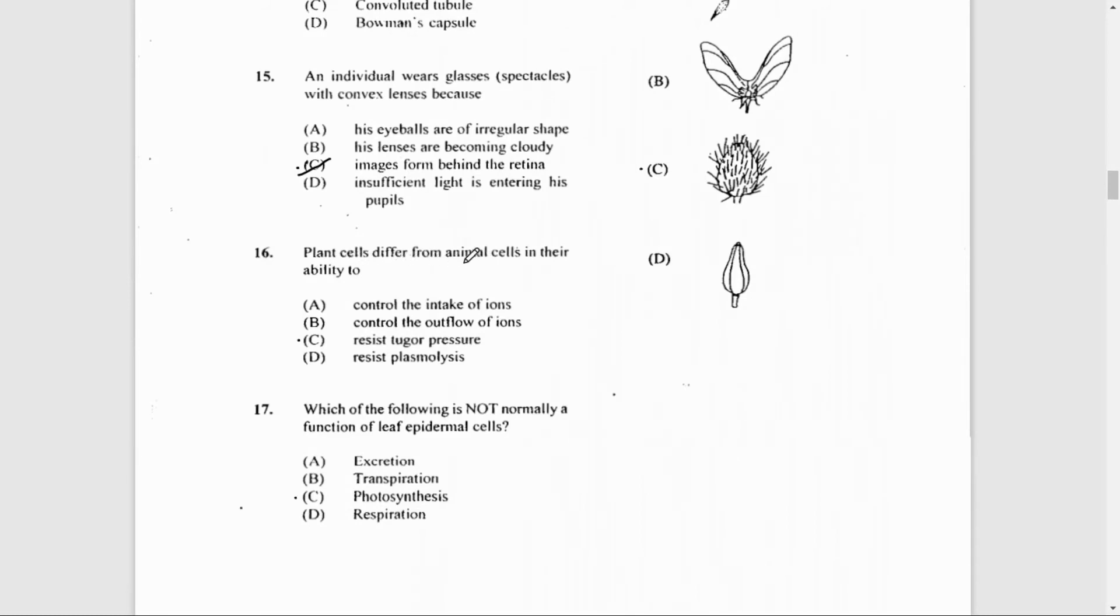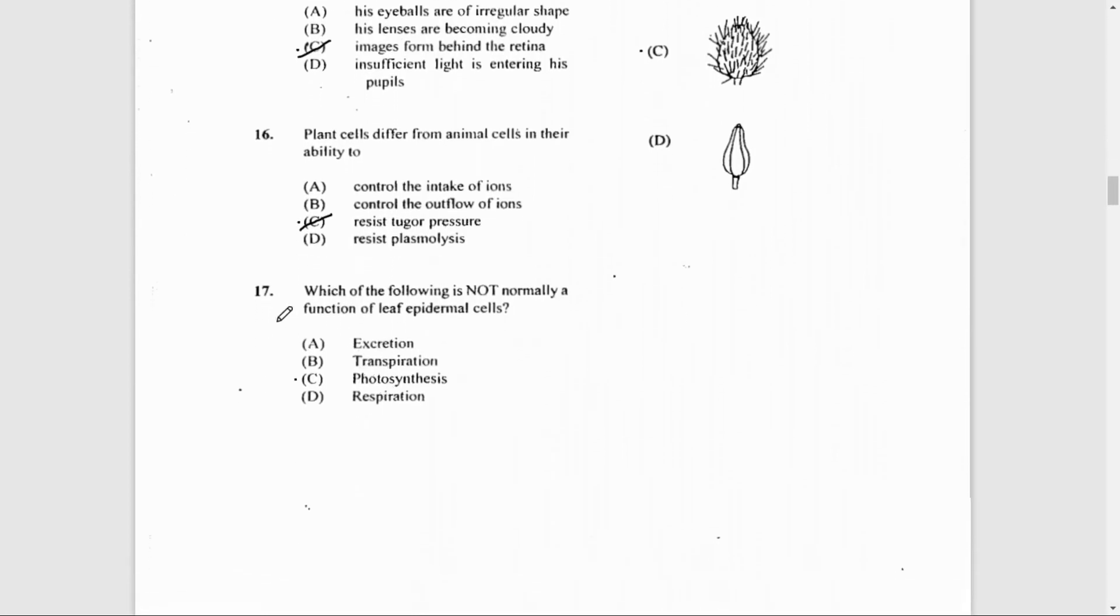Number 16: Plant cells differ from animal cells in their ability to resist turgor pressure. That is because of the cell wall. Remember that turgor pressure is the increasing pressure as water moves into the plant cell.